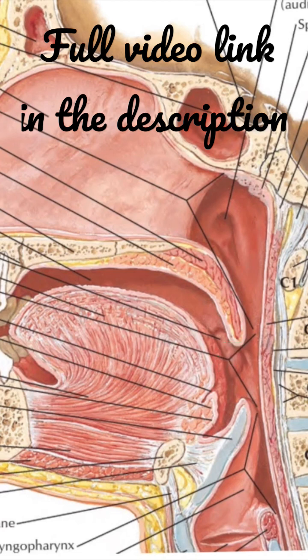From the base of the uvula, two muscular folds extend downward on each side. You have the palatoglossal fold, or the palatoglossal arch, which passes downward and forward to the side of the tongue, in front of the tonsillar sinus.